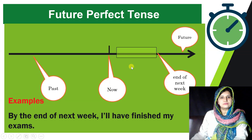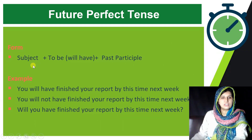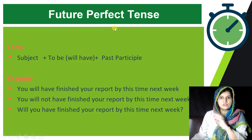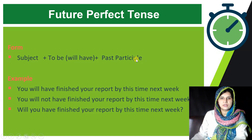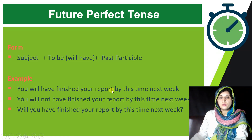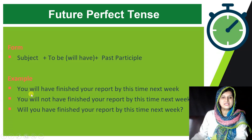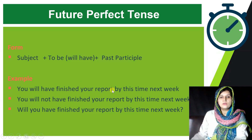Now we'll talk about the structure of Future Perfect Tense. The formula is: Subject + will have + past participle. For example: 'You will have finished your report by this time next week.' Here 'you' is the subject, 'will have' is the helping verb, 'finished' is the main verb in past participle form, 'report' is the object, and 'by this time next week' is the time marker.